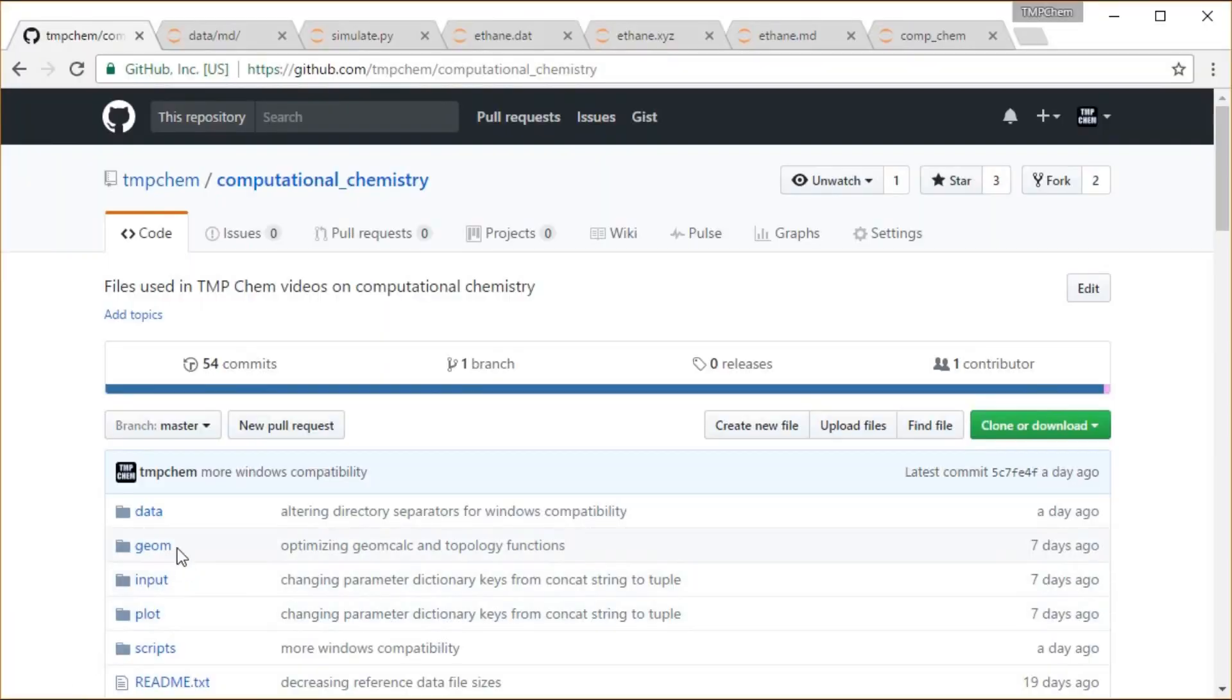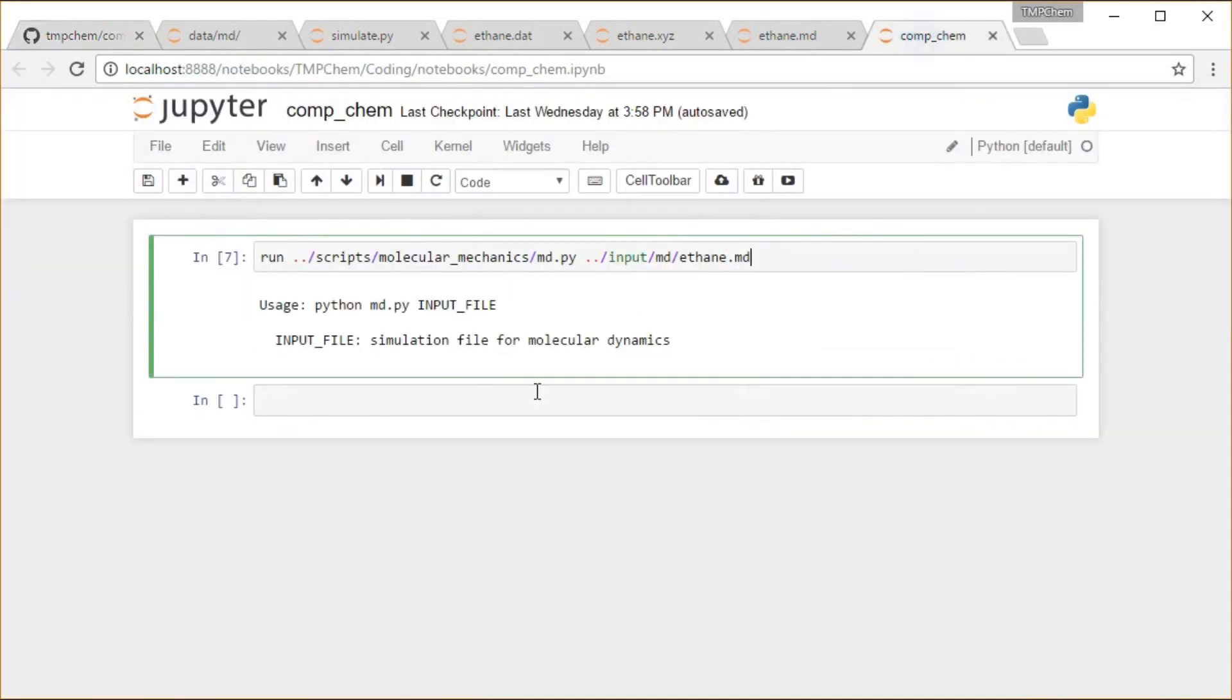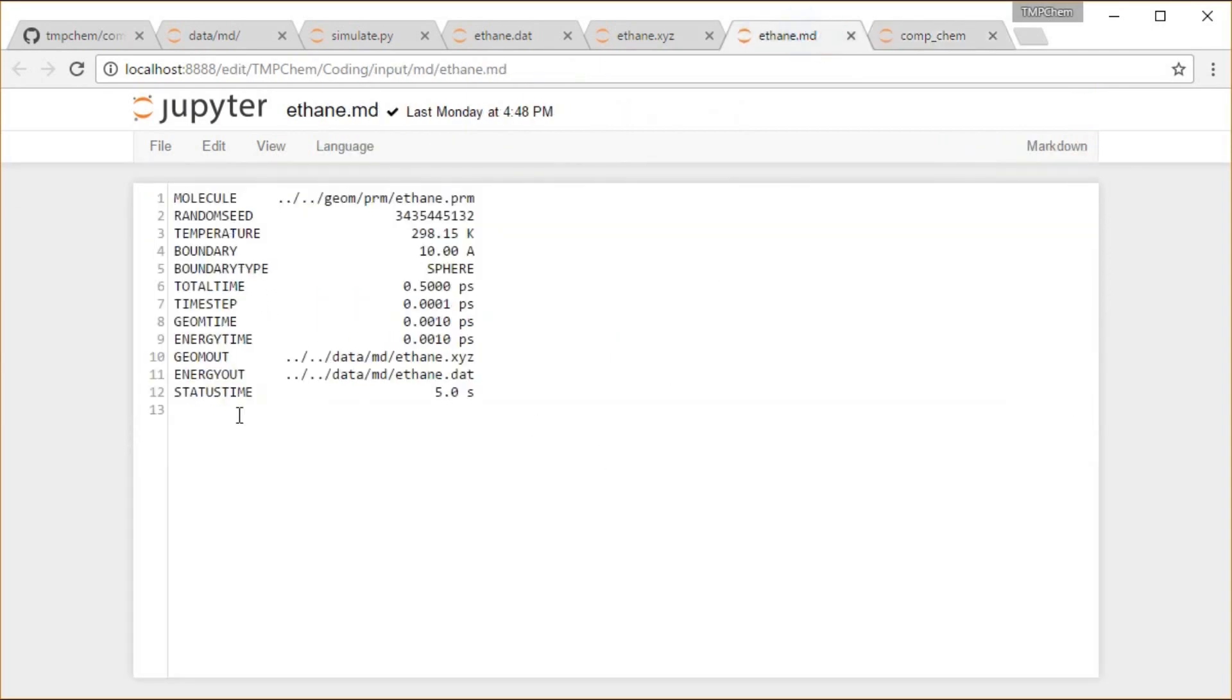So I have a fully functional program in my GitHub computational chemistry repository, which we'll be detailing a little bit later in this chapter. As far as running molecular dynamics, if you run it without arguments, it tells you you need this simulation file. So for example, if I run this ethane.md, which is just an input simulation that I read in inside of that program, tells me what molecule I get, my temperature, how big of a box I want. I want it to be a sphere, I'm going to run for half a picosecond, a time step of 0.1 femtoseconds, how frequently I print out the geometry and the energy, what files I do that to, et cetera.